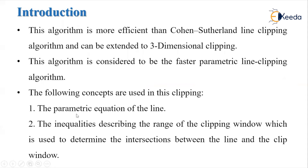It makes use of the parametric equation of a line. For each line we have two endpoints, and for those endpoint coordinates we write the parametric equation. Then the inequalities describing the range of the clipping window are used to determine the intersections between the line and the clip window — we give a certain range between the clipping window and the line. Let's see the parametric equation, then we will see the algorithm steps.